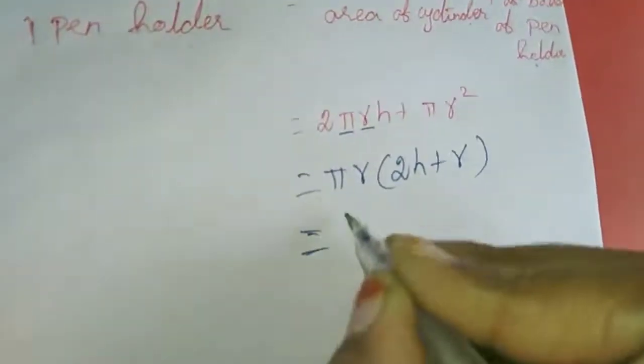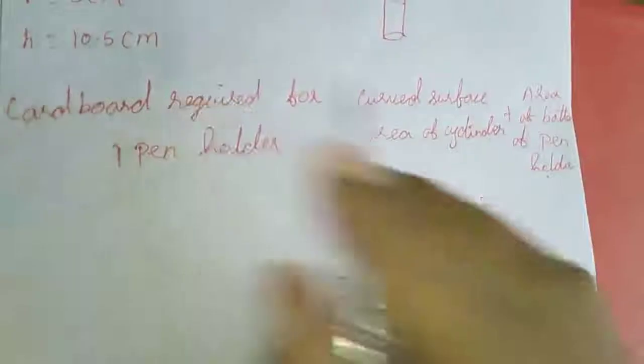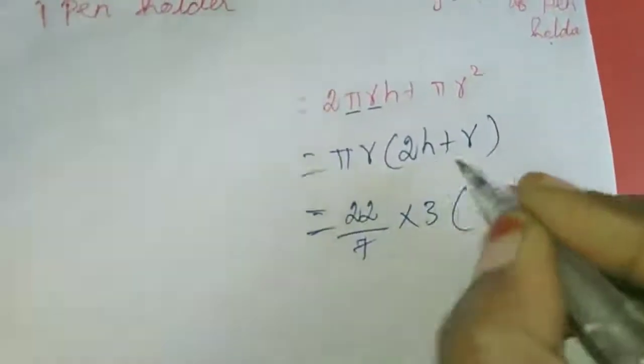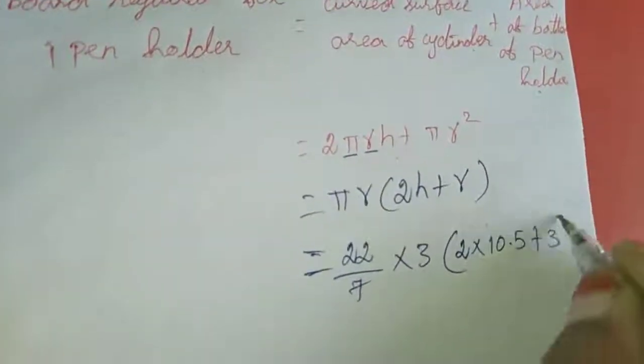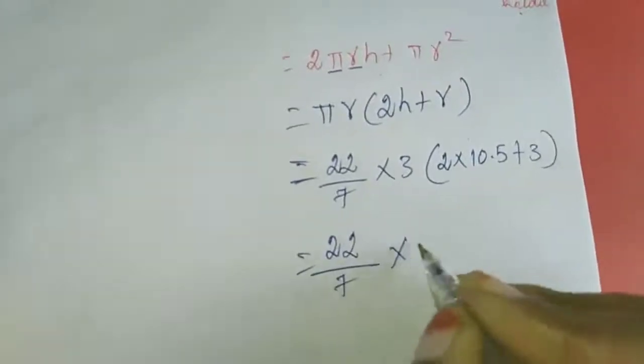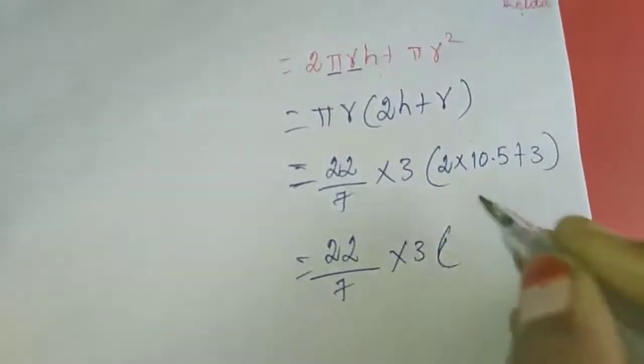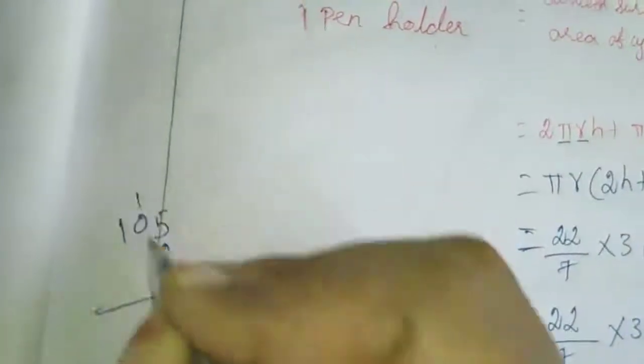Now I am going to substitute the values. For π, 22 by 7, for R 3, 2 into H is 10.5, plus again for R 3, so 22 by 7 into 3 squared.